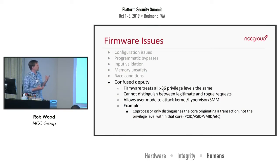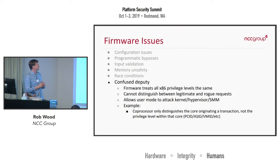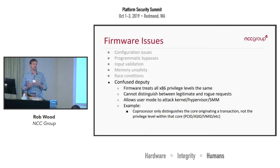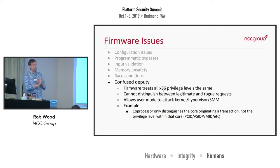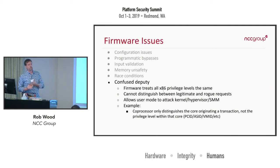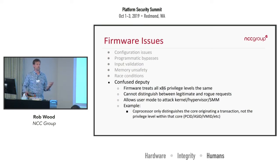Most architectures have some notion of an address space ID or VM ID — there's a bunch of different terminology depending on the architecture. Basically it's a way to tag an address space as belonging to a particular security context. Three things need to happen: the OS and hypervisor need to be setting these flags; that data needs to be propagated out through all the different places where it will be used; and the firmware on the coprocessor needs to actually enforce it. We've seen that break down at any or all of those three spots.